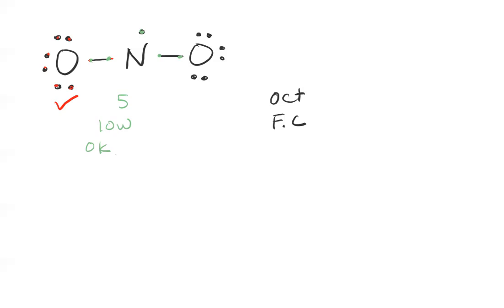Then the last one is this last oxygen. It looks like the first one but count them anyway - one, two, three, four, five, six, seven, eight. So octets good. My octet rule is okay the way it is.